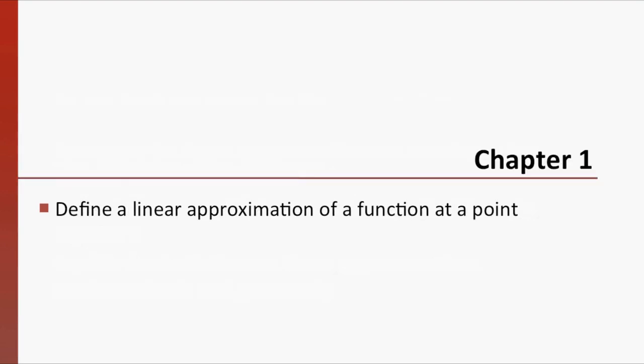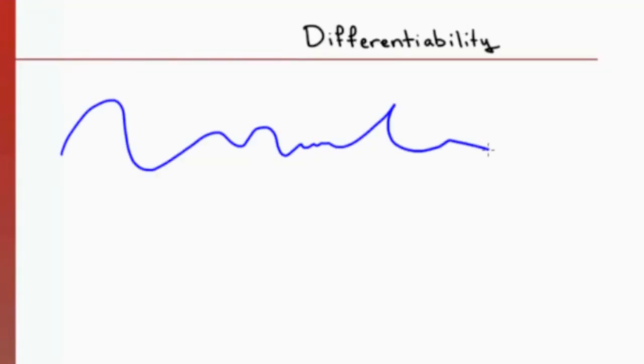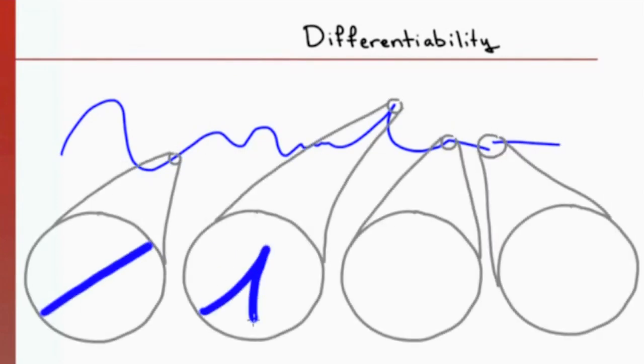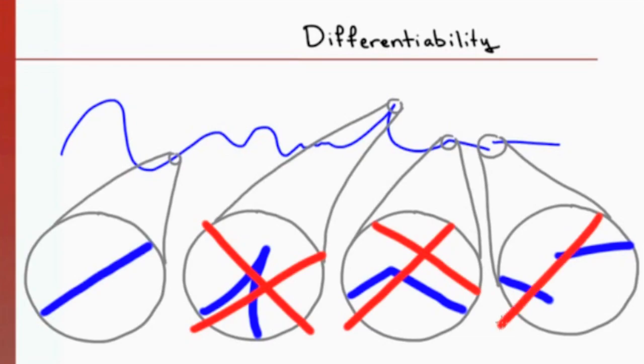Let's begin by defining the linear approximation. Recall that if a function is differentiable at a point c, then when we zoom in on the point c, the function begins to look more and more like a line. This only works when the function is smooth. It doesn't have any kinks, corners, or discontinuities.